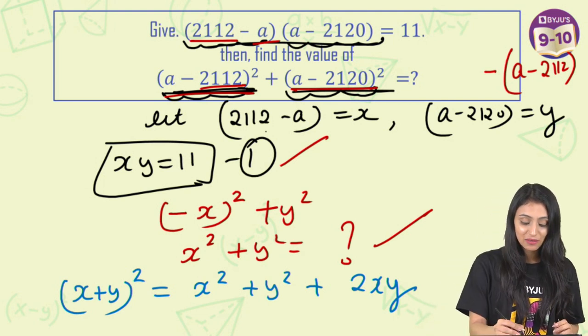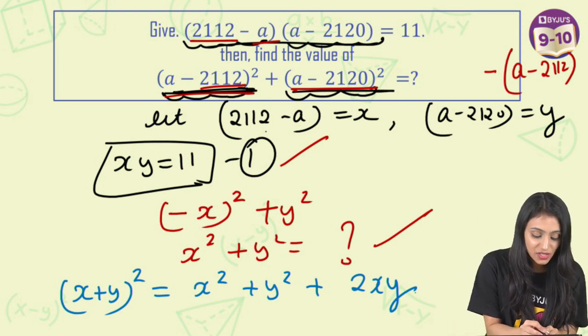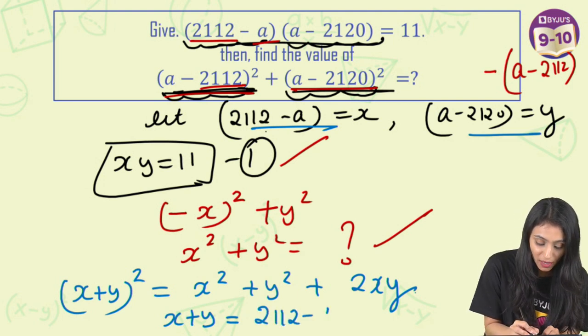But if you see, we have the value of xy, I do not have x square and y square, that we actually need to find out. Let's first find out x+y. What is x here? x is this, y is this. Let's put it here, we have 2112-a and this is a-2120.